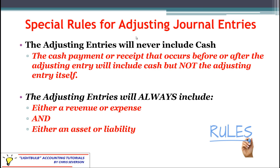Another reminder on the special rules for adjusting journal entries: the adjusting entries themselves will never include cash. There will be a cash payment that happens either before the adjusting entry or after it, but the actual adjusting entry itself will not include cash. Also, adjusting entries will always include an income statement account — either revenue or expense — and a balance sheet account — either an asset or a liability.